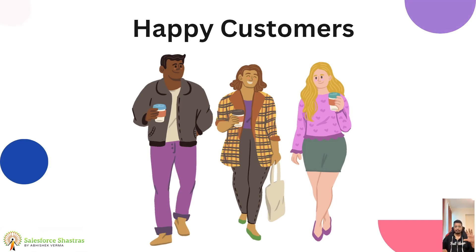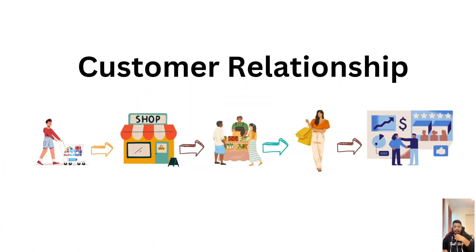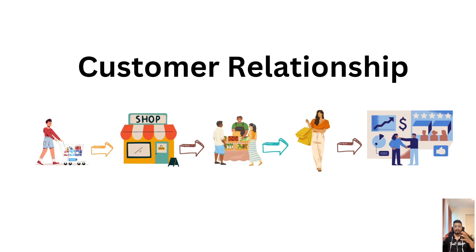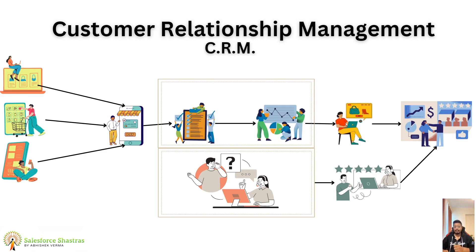This entire process — from remembering a person's name to providing a particular product — is called customer relationship. When you have a good relationship with the customer, your business always grows. This all happens with the shopkeeper remembering everything in his mind. He doesn't have any database because he has a very small shop. Now his business increases and he wants to store all this information in a particular system. That is what customer relationship management does — the same thing but in a digital way.